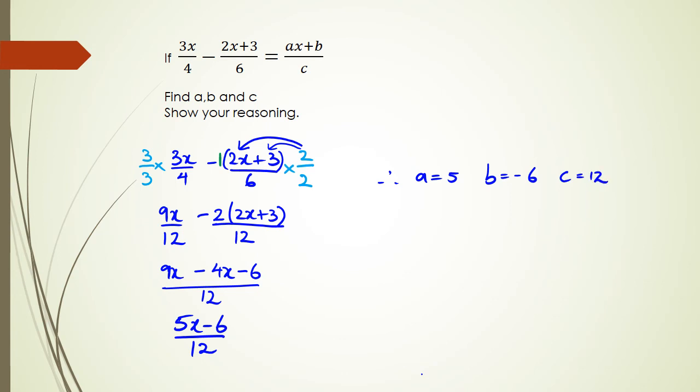Okay. And most people, the part where they make a mistake is this area here, where sometimes people write this as 9x minus 4x plus 6 over 12. So you've really got to be careful with this negative sign there. All right, guys, that's basically it for this type of question today. If you have any questions, pop it in the comments below and I'll try my best to answer them. But apart from that, thank you for watching.